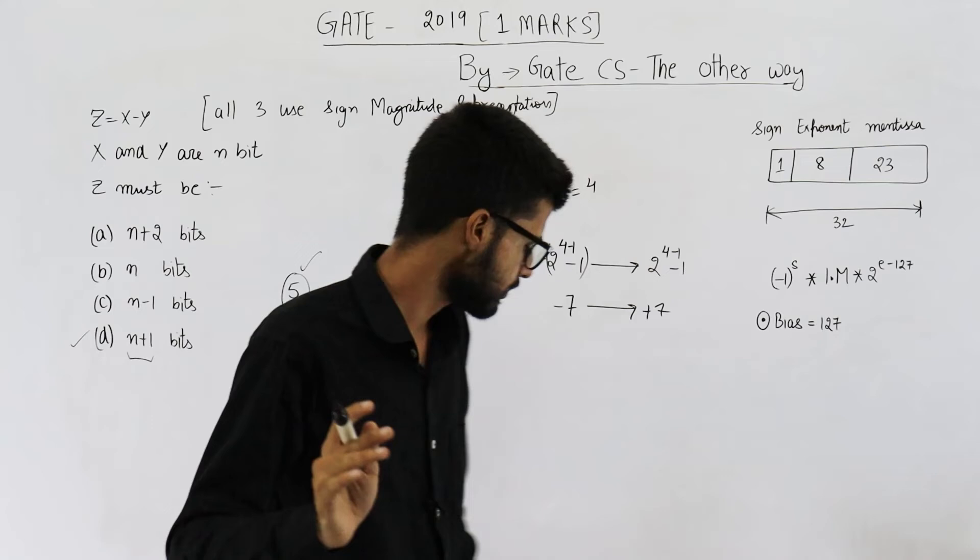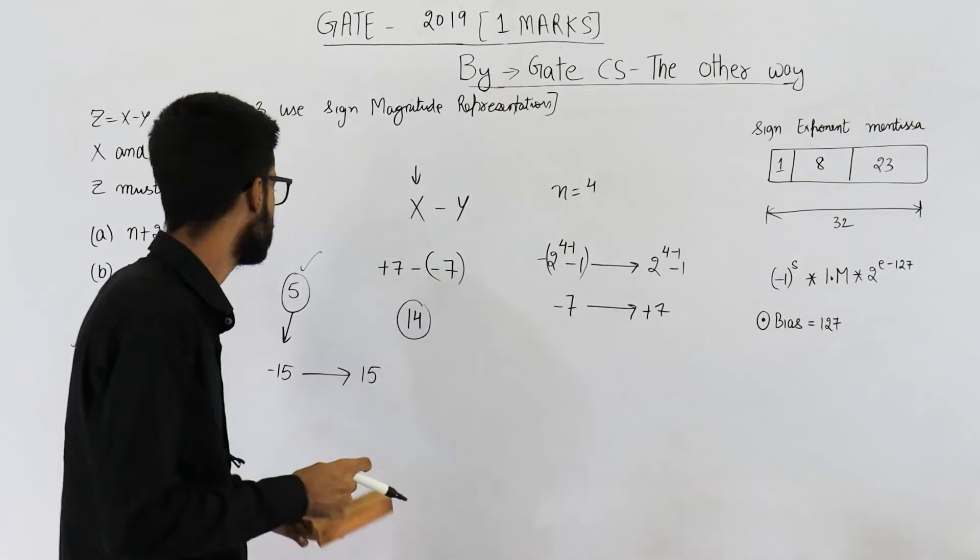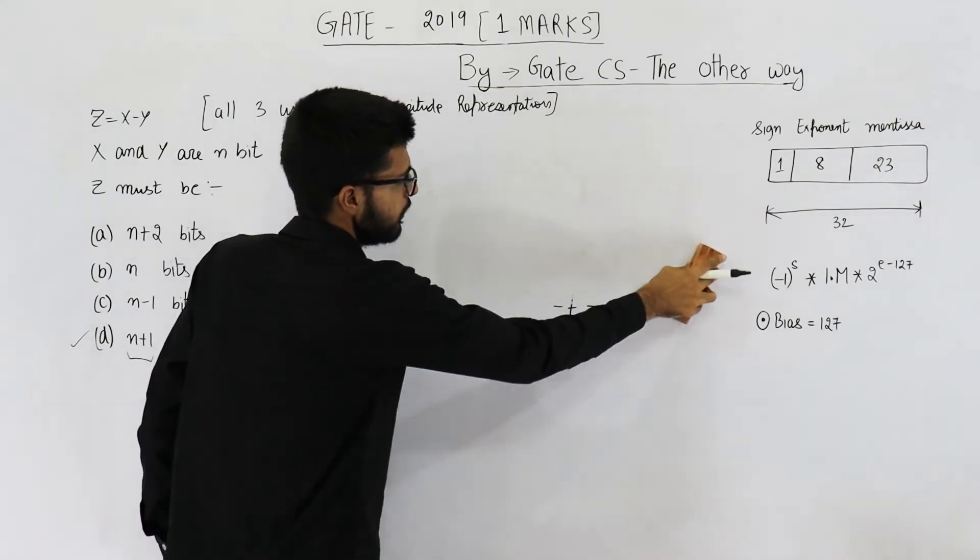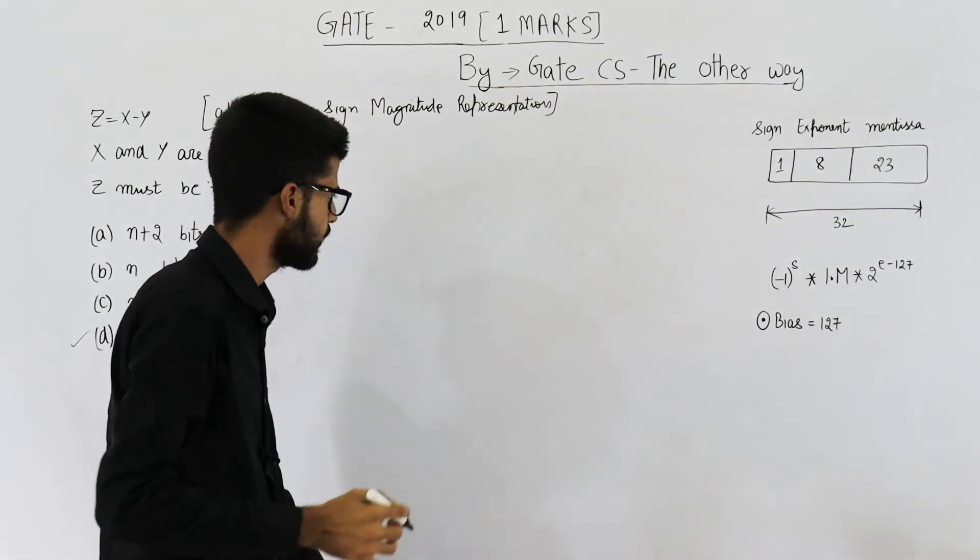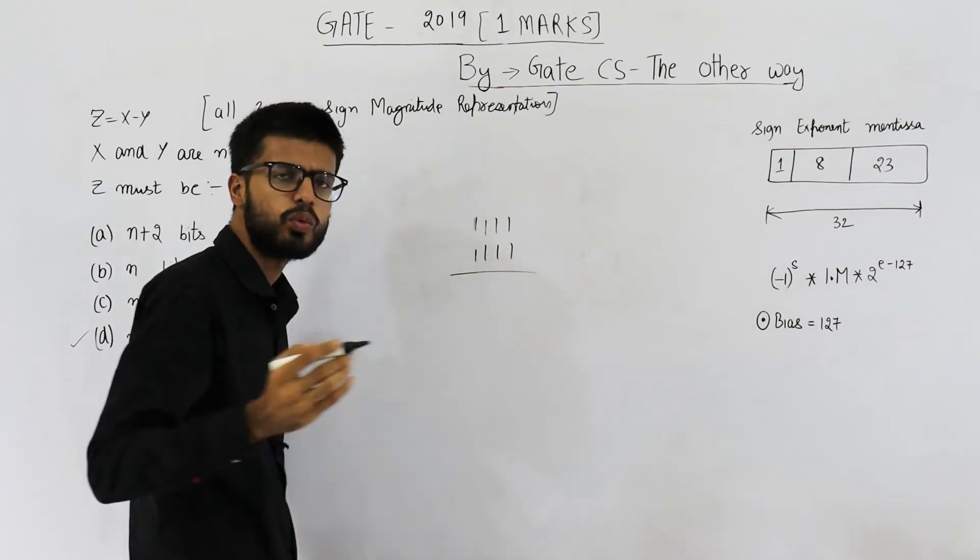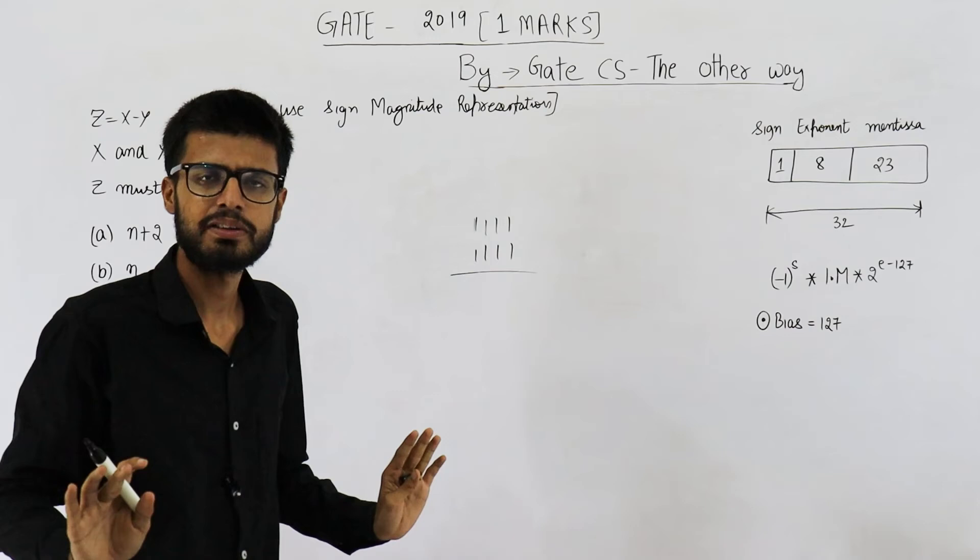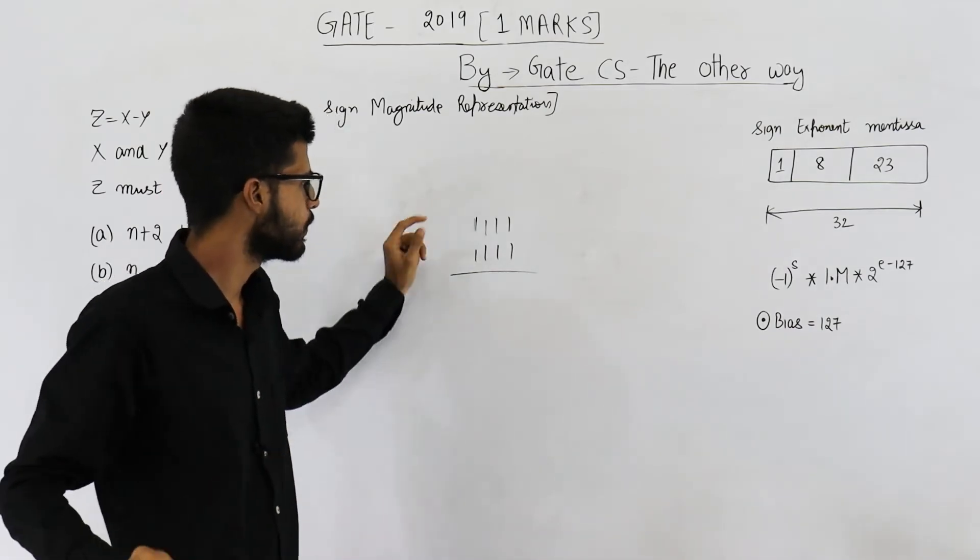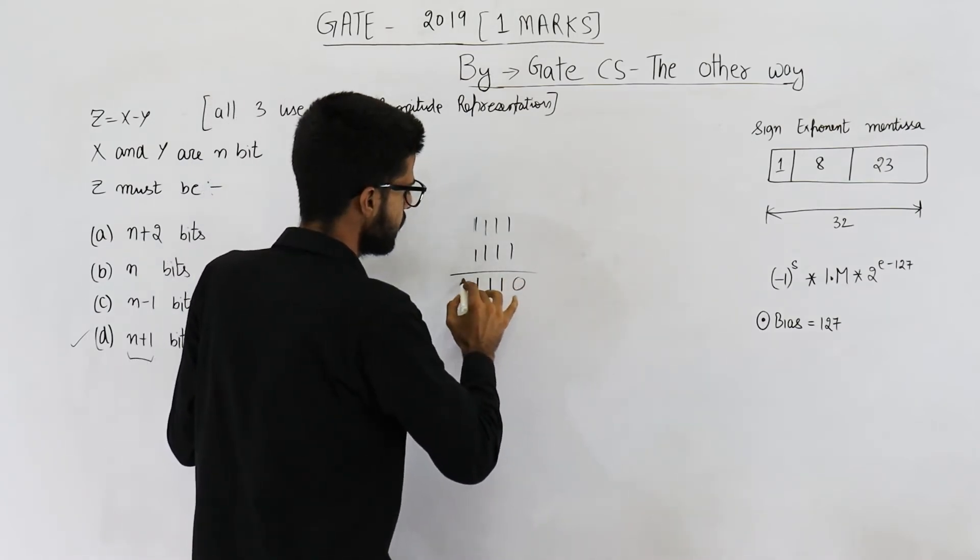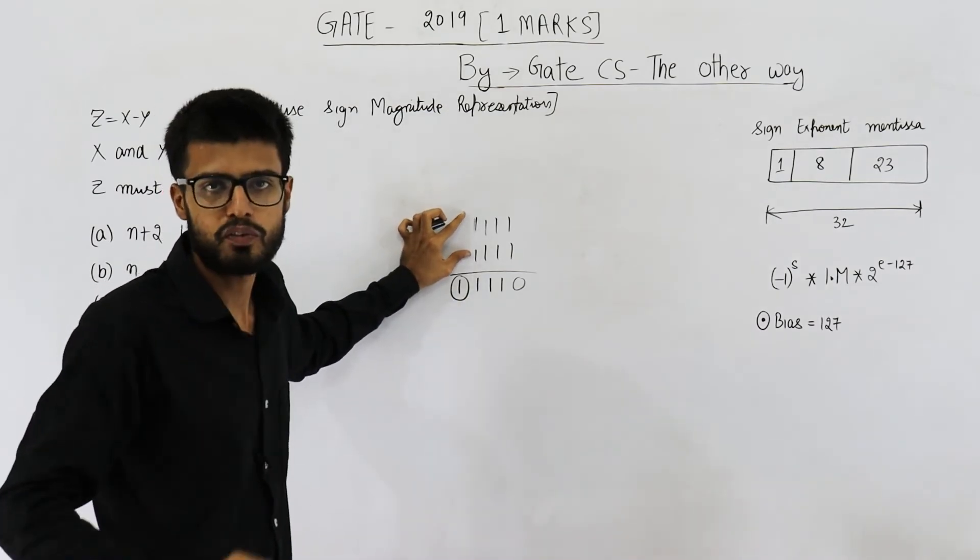And if you just ignore the fact that they are represented in sign magnitude representation, just for a moment. Whatever are the numbers, they are n bit. In worst case, for now, ignore that they are in sign magnitude representation. Just look at these numbers as normal binary numbers. So if you add them, you are going to get this. That means in worst case, you can cause only 1 bit of overflow. If you add any 2 binary numbers, you can never cause 2 bits of overflow.